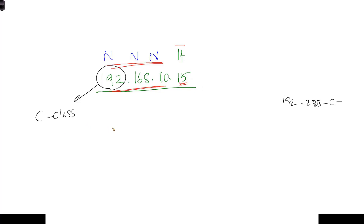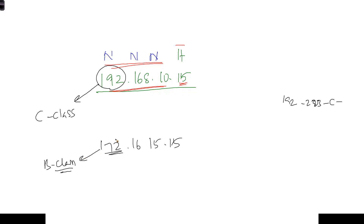Similarly, when we write an address like 172.16.15.15, by seeing this range we say this is a B class example, and in B class there are two network portions and two host portions.